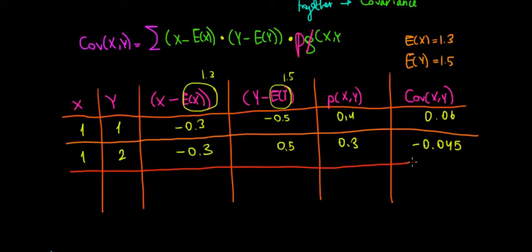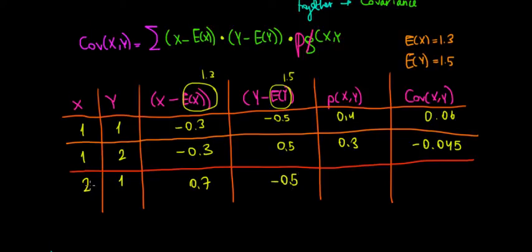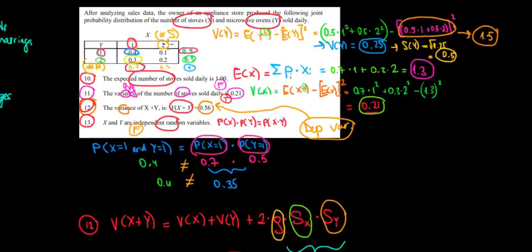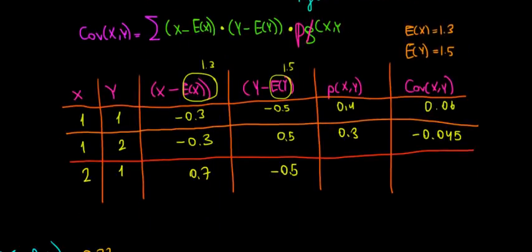Next combination: x=2, y=1. The difference between 2 and the expected value of x (1.3) is 0.7. The difference between 1 and the expected value of y (1.5) is minus 0.5. The probability of x=2 and y=1 from the table is 0.1. Multiplying 0.7 times minus 0.5 times 0.1, we get minus 0.035.